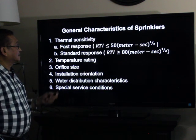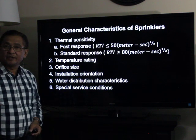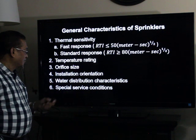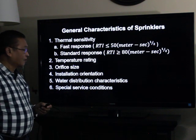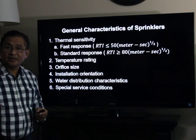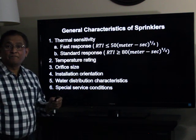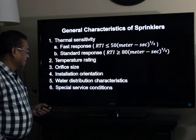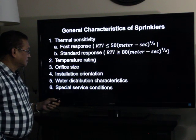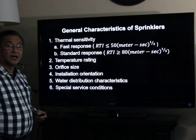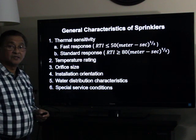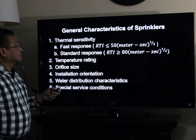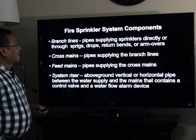The next characteristic is the temperature rating. The third characteristic is orifice size. The fourth is installation or orientation — such as upright sprinkler, pendant sprinkler, and flush sprinkler — depending on orientation and water distribution characteristics. The fifth is special service conditions, like corrosion-resistant sprinklers.